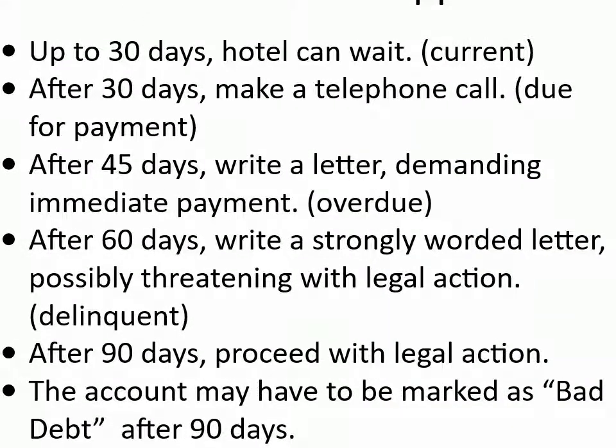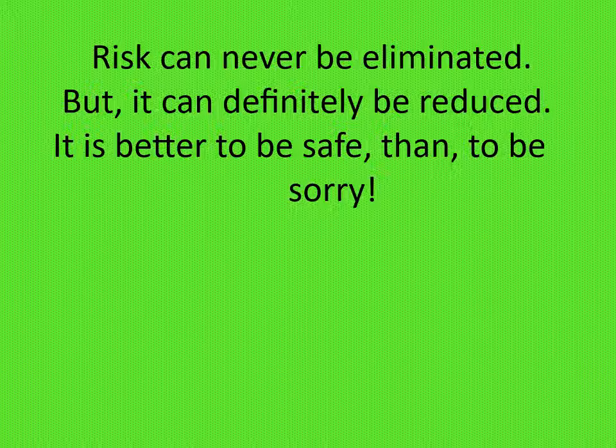When default happens: Up to 30 days, the hotel can wait (current). After 30 days, make a telephone call. After 45 days (due for payment), write a letter demanding immediate payment. After 60 days (overdue), write a strongly worded letter, possibly threatening legal action. After 90 days (delinquent), proceed with legal action — the account may have to be marked as bad debt. Risk can never be eliminated, but it can definitely be reduced. It is better to be safe than to be sorry.